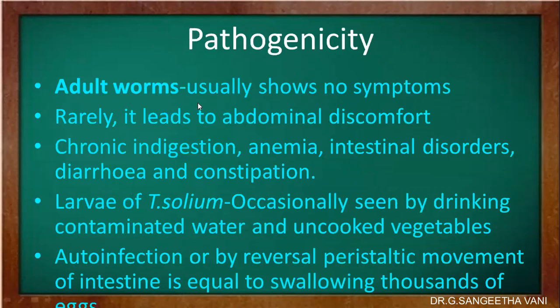Regarding pathogenicity: adult worms usually do not show any symptoms, but rarely may lead to abdominal discomfort, chronic indigestion, anemia, intestinal disorders, diarrhea, and constipation. In the larval stage, infection is seen very rarely, caused by drinking contaminated water or eating uncooked vegetables. Auto-infection may also occur due to reversal of peristaltic movement of the intestine, which is caused by unhygienic practices — the gravid segments are thrown back to the stomach, equivalent to swallowing thousands of eggs.